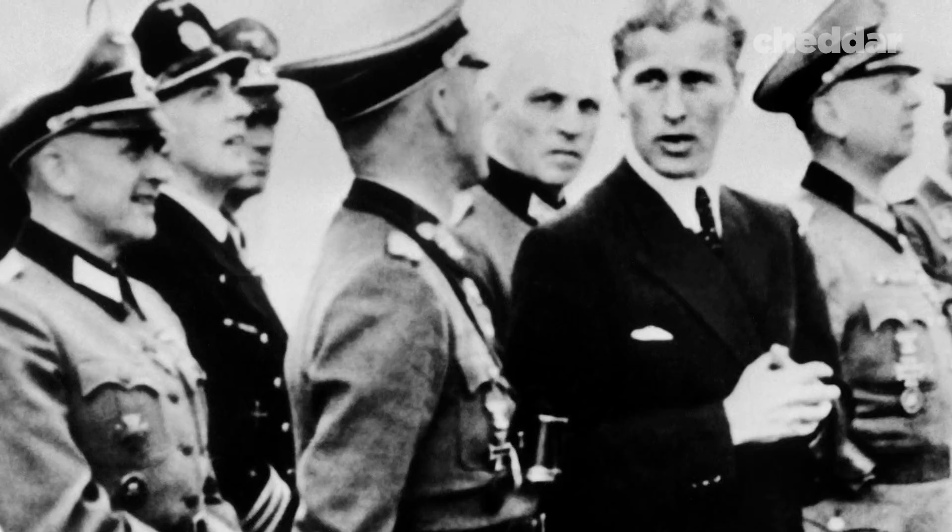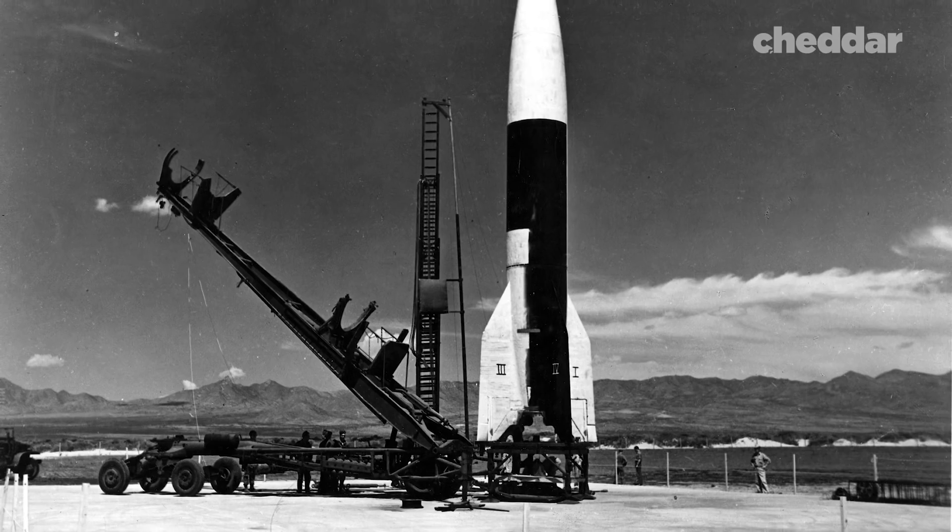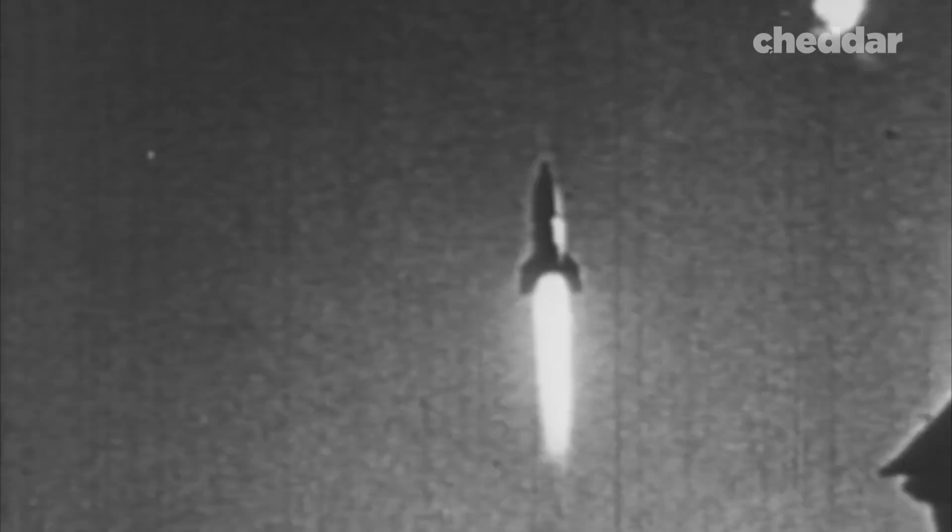Von Braun excelled at rocketry as a young engineer in Germany. The Nazis took notice and put him in charge of developing one of their most advanced weapons, the V-2 ballistic missile. He's basically in a Faustian bargain with the Third Reich. They gave him all this money and power to build rockets. And he was very enthused about going into space with rocketry. But he was quite willing to build weapons.